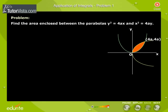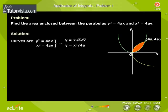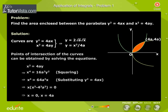The problem: find the area enclosed between the parabolas y square is equal to 4ax and x square is equal to 4ay. The solution: points of intersection of the curves can be obtained by solving the equations y square is equal to 4ax and x square is equal to 4ay.